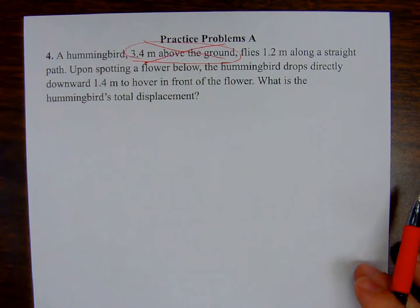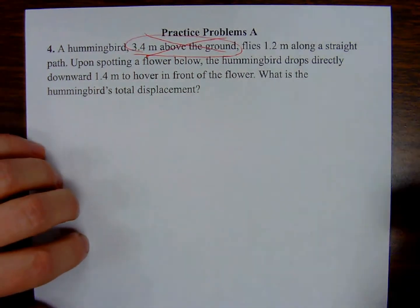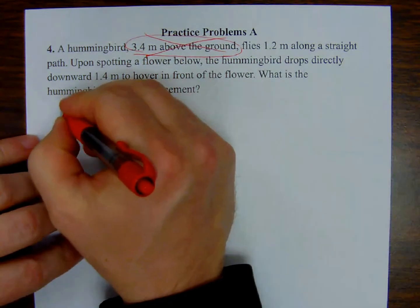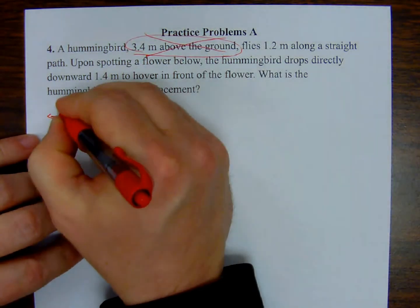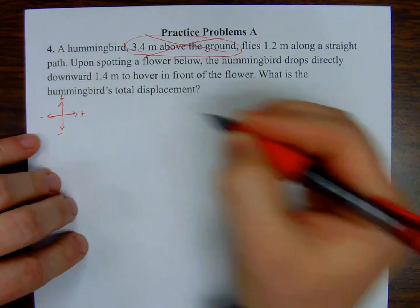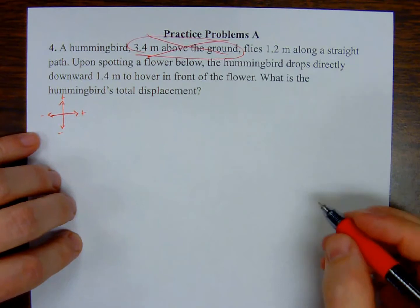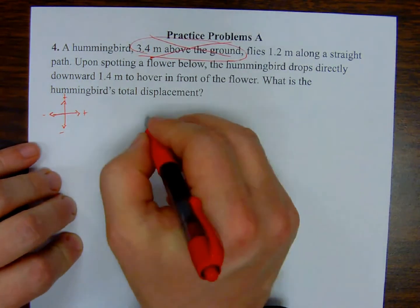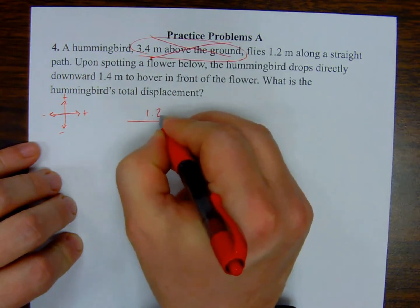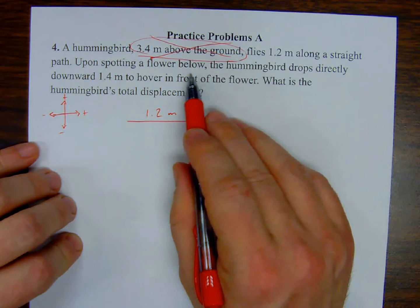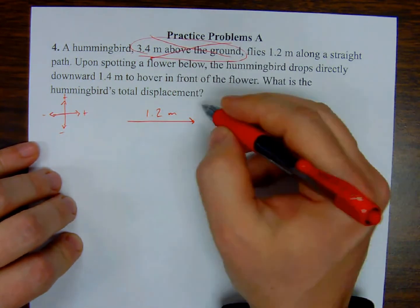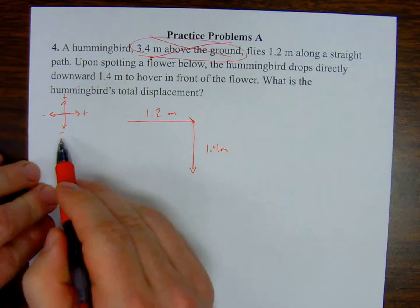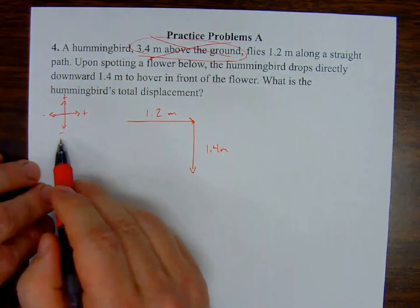Let's draw our picture. It is flying 1.2 meters along a straight path. Well, what direction? Let's establish our directions. 1.2 meters along a straight path - let's have that be in the x direction. So 1.2 meters. Then the hummingbird drops directly downward 1.4 meters. But look at the coordinate system that we've established. This needs to be negative 1.4 meters, right, because it's going down. You've got to communicate direction.